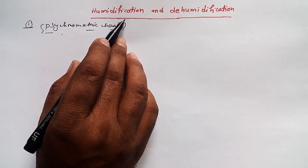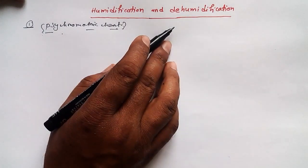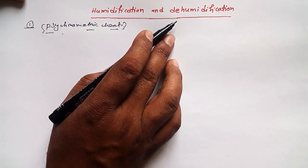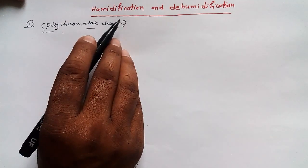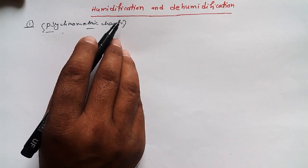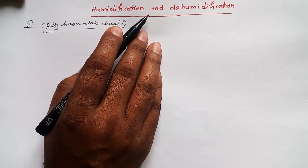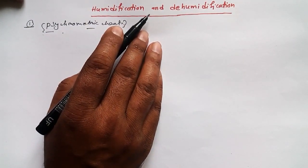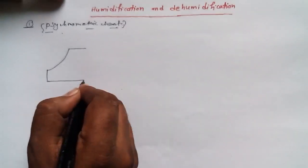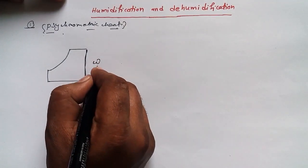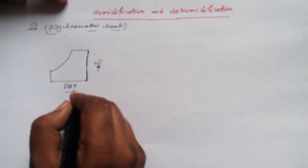In humidification, the quantity of water vapor in the air will be increased. In dehumidification, the quantity of moisture — water vapor — will be decreased. These two processes are used in refrigerating systems and are also important for human comfort. I'm going to draw a simple psychrometric chart. The vertical axis omega is known as specific humidity, and the horizontal axis is dry bulb temperature, DBT.